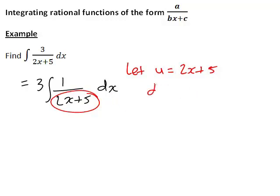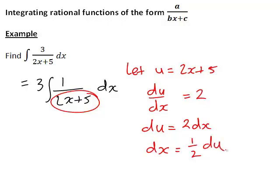So differentiating u, we get du dx equals 2. Rearranging, we get du is 2 dx, and hence dx can be replaced with a half du.